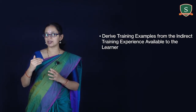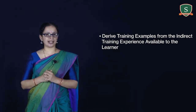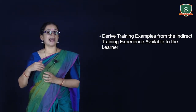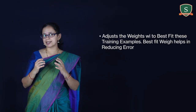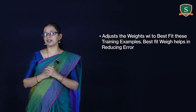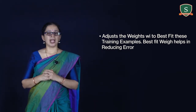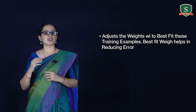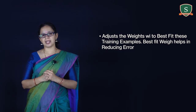The function approximation procedure has two steps. First, derive training examples from the indirect training experience available to the learner. Second, adjust the weights Wi to best fit these training examples. The best-fit weights help in reducing the error.